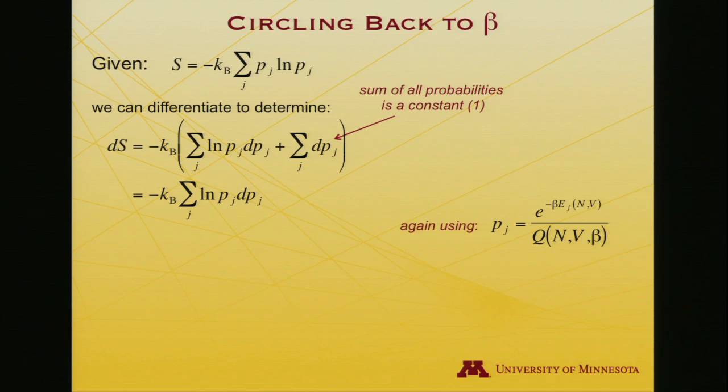And as a result, I'm left with ds is minus k, sum over states, log probability, d probability. I'll again substitute in for the probability the actual expression that it's e to the minus beta energy of that state divided by the partition function.